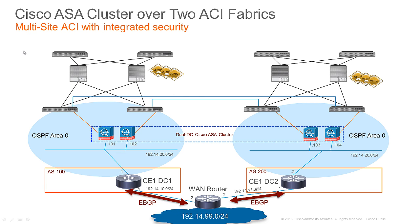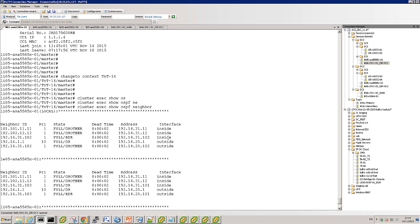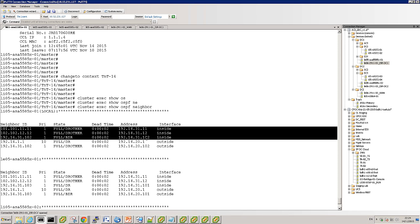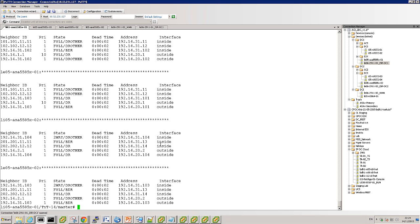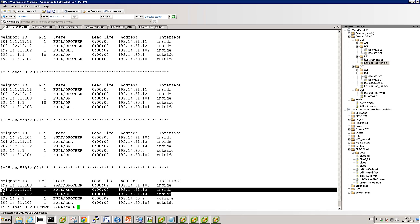The ASA is also configured to run OSPF towards the fabric. On the ASA inside interface of data center one, the two ASAs will peer with fabric one — so dot 11 and dot 12. And the ASAs in data center two will peer with the fabric at dot 13 and dot 14. Coming back here, you can see that the ASA connected to fabric one is peering with 11 and 12 in addition to the other ASA, and the ASAs in data center two are peering with fabric IPs 13 and 14 on the fabric side. This quickly demonstrates how the ASA is actually configured.